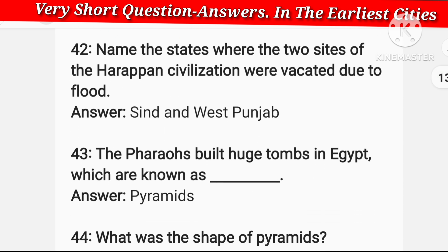Name the states where two sites of Harappan civilization were vacated due to flood. Those sites were in Sindh and West Punjab.